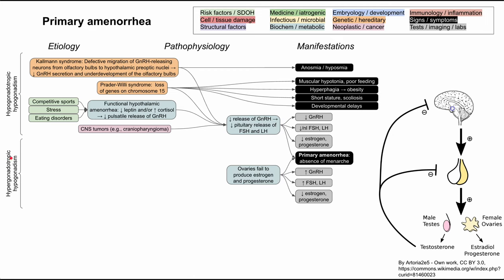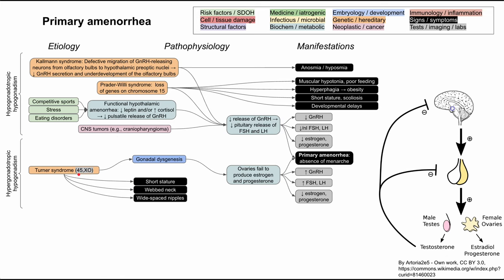Now let's move on to hypergonadotropic hypogonadism — largely a problem with the ovaries failing to produce estrogen and progesterone — which usually happens through gonadal dysgenesis. The best known cause of gonadal dysgenesis in women is Turner syndrome, where you're missing an X chromosome with karyotype 45,XO. Phenotypic features include short stature, webbed neck, and wide-spaced nipples. On imaging, these girls may have streak ovaries, explaining why the ovaries aren't producing estrogen and progesterone.